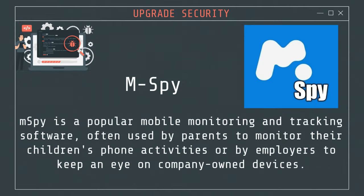Number 1: mSpy. mSpy is a popular mobile monitoring and tracking software, often used by parents to monitor their children's phone activities or by employers to keep an eye on company-owned devices. It is compatible with both Android and iOS devices. It offers a wide range of features for monitoring an iPhone or Android device without being caught. It lets you track calls, texts, emails, GPS location, social media activity, and much more.